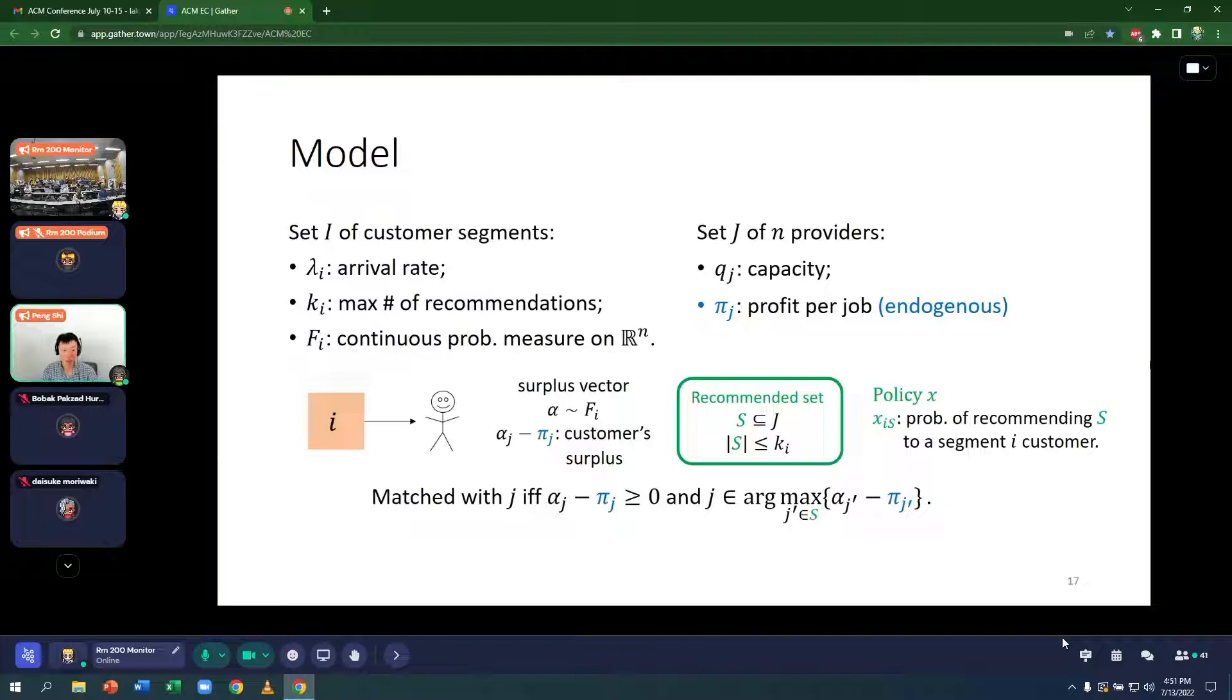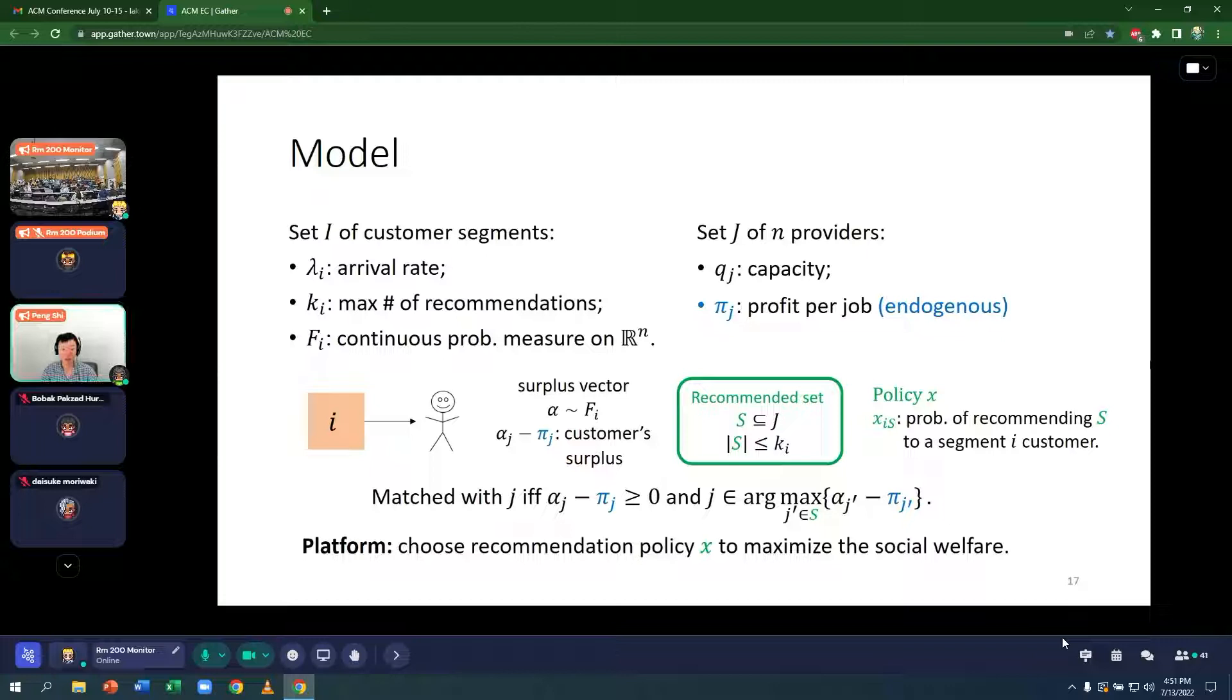So given this set S of four kitchen remodelers, the customer is matched with the provider J such that her surplus is not negative and this provider is her favorite within the set S. So J is the argmax of the customer's surplus. And the platform chooses the recommendation policy X to maximize the social welfare, which is defined to be the total surplus of all the customers and all the providers.